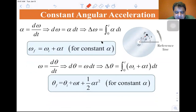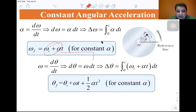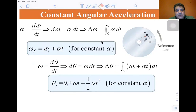Angular velocity is the time rate of change of position: ω = dθ/dt, so dθ = ω·dt. We know that ω_final = ω_initial + α·t. We substitute this expression and integrate from 0 to t: Δθ equals the integral of (ω_initial + α·t)·dt. You end up with ω_initial·t + one-half α·t². So θ_final = θ_initial + ω·t + one-half α·t², again for constant acceleration.